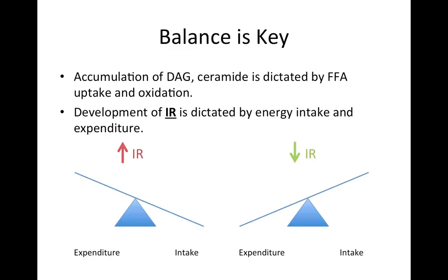For this week, we shifted our focus away from the muscle level specifically to a wider, whole body focus. We used to think in terms of DAG and ceramide accumulation and how that's a product of fat uptake and fat oxidation. Now, as we pull back, we're thinking in terms of insulin resistance. Obesity leads to insulin resistance, leads to type 2 diabetes, and those are dictated by total energy intake and expenditure.